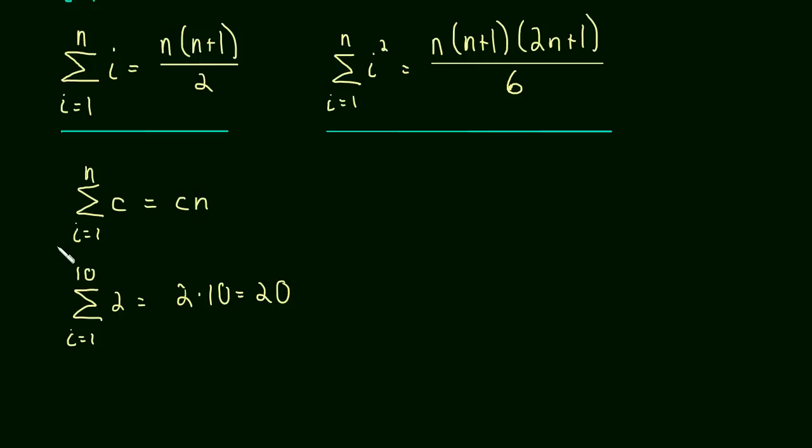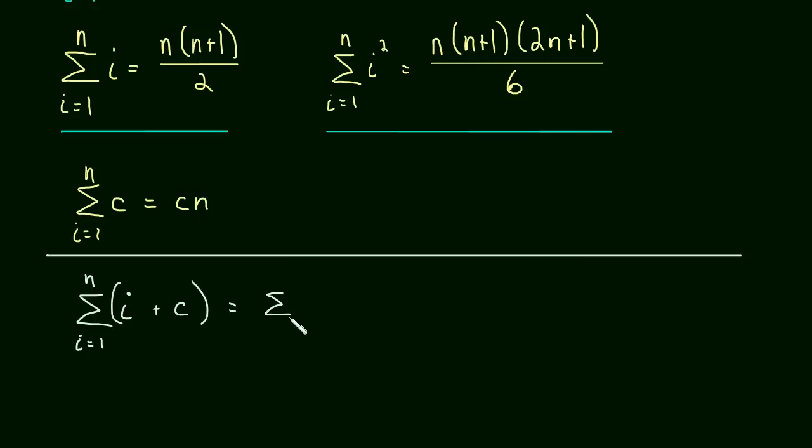So these are three summation formulas that you're going to want to know. The sum of a constant, the sum of just i, and the sum of i squared. And then the other things that you're going to want to know about sums are just some simple properties that are really similar to properties that we've already seen. But the sum as i goes from 1 to n of, let's say, i plus c. So you're taking the sum of both of these. Well, this is just the sum as i goes from 1 to n of i plus the sum as i goes from 1 to n of c. So this is a very similar property we have when we were talking about limits. The limit of a sum was the sum of the limits. Here the sum of a sum is the sum of the sums. I know that sounds ridiculous, but you understand this property. You can see what's going on.